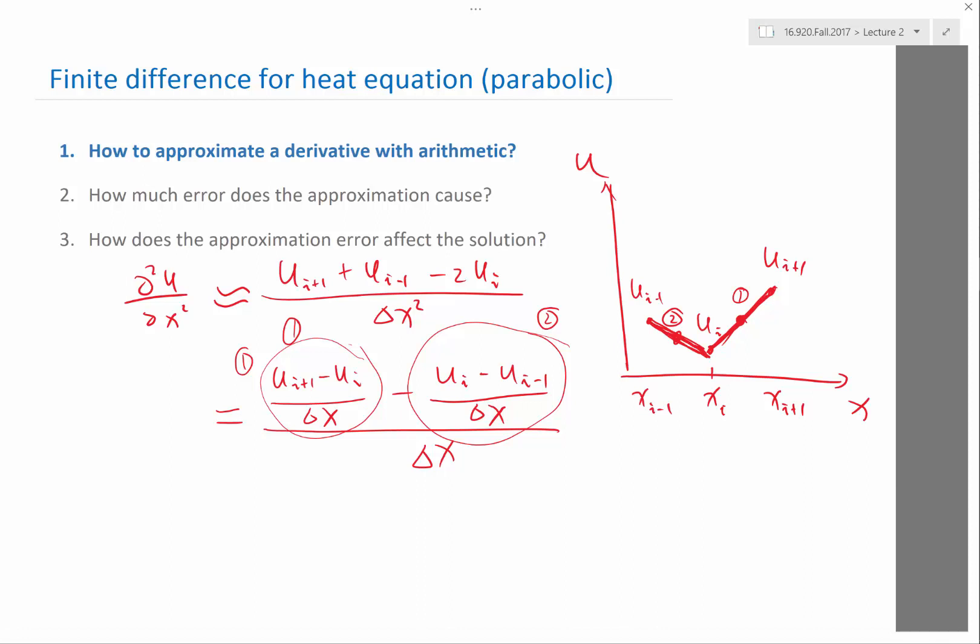Again, we recover the same formula. Finite difference is nothing but doing approximations like that, using the value of the function at discrete grid points.